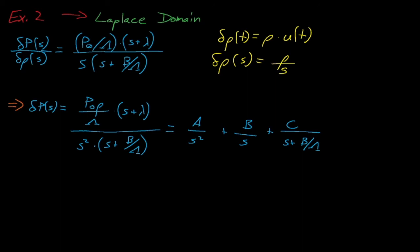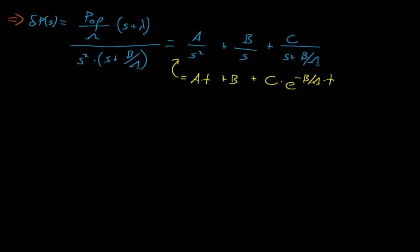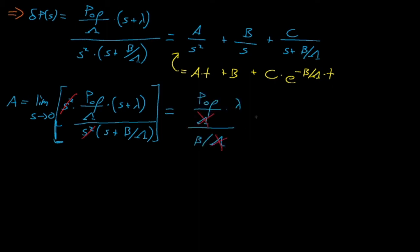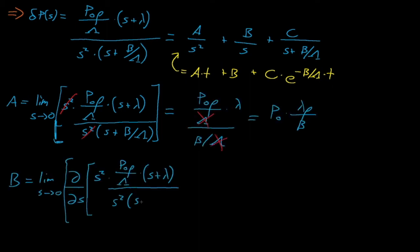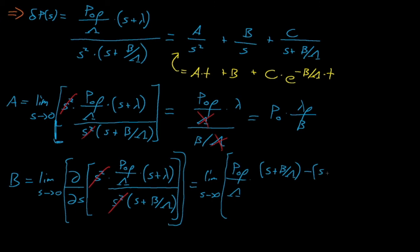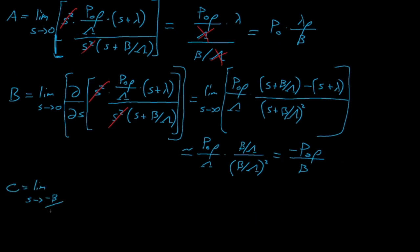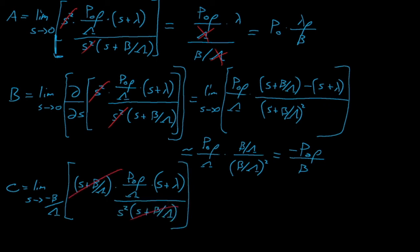If we convert these terms back into the time domain, we see that our solution contains an a times t term plus b plus c times e to the negative beta divided by lambda times t. Wait a minute, this looks strangely familiar to our time domain solution. We can solve for a, b, and c for our partial fraction expansion, and after a little bit of mathematical excruciation, we arrive at this expression for delta p as a function of t, which is exactly equal to our time domain solution.